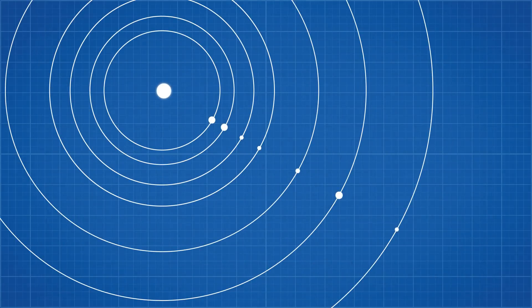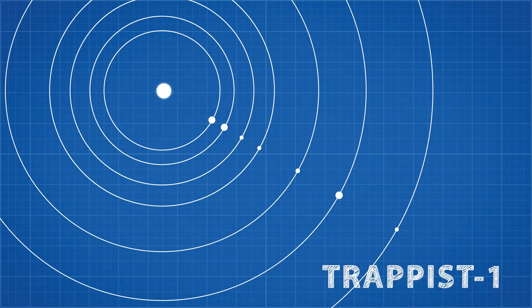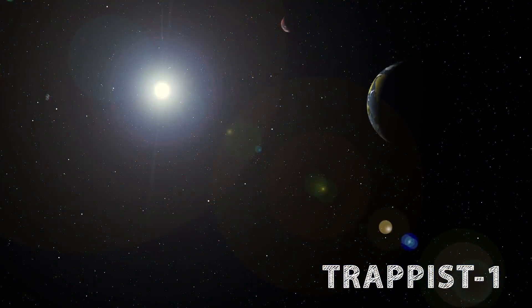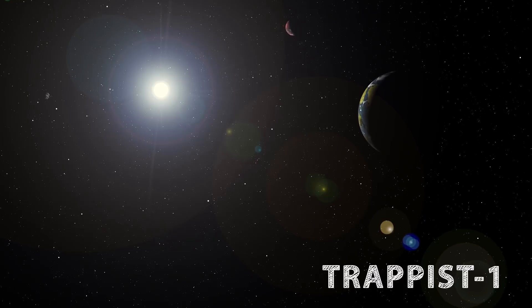Perhaps the most fascinating planetary system we have discovered is that of TRAPPIST-1. An ultra-cool dwarf star located 40 light years away from our sun, which has not only one temperate terrestrial planet, but seven.